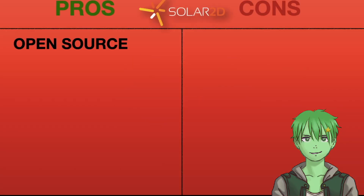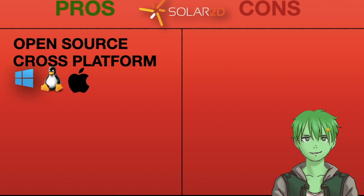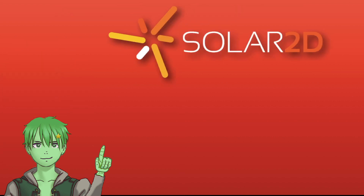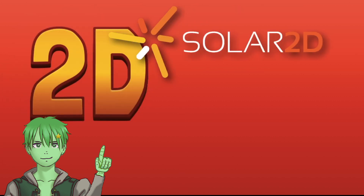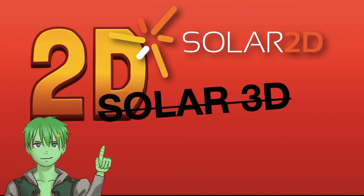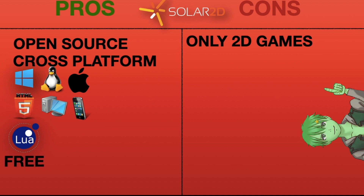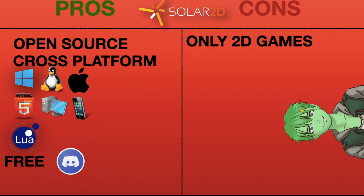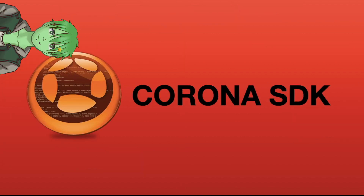Number 8: Solar2D. Solar2D is an open source and cross-platform game engine for Windows, Linux and Mac which you can use to make browser games, PC and mobile games. You can make games in the Lua programming language. You can only make 2D games with it — but that's why it's called Solar2D and not Solar3D. It is a completely free game engine and there are forums and Discord servers to help you out, as well as some YouTube tutorials. Before 2020 the engine was titled Corona SDK, but obviously they needed to change their name.